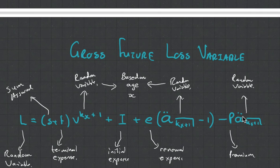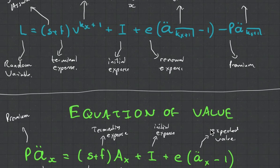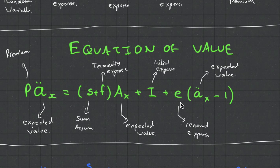The gross future loss variable is pretty much the same as the net future loss variable, except this time we are introducing expenses. You can see F over here is the terminal expense. Also, look at the I, which we know is the initial expense. And here we see the renewal expense and they've got a nice formula with the subtracting one. And then the equation of value, you can see where the expenses come in.